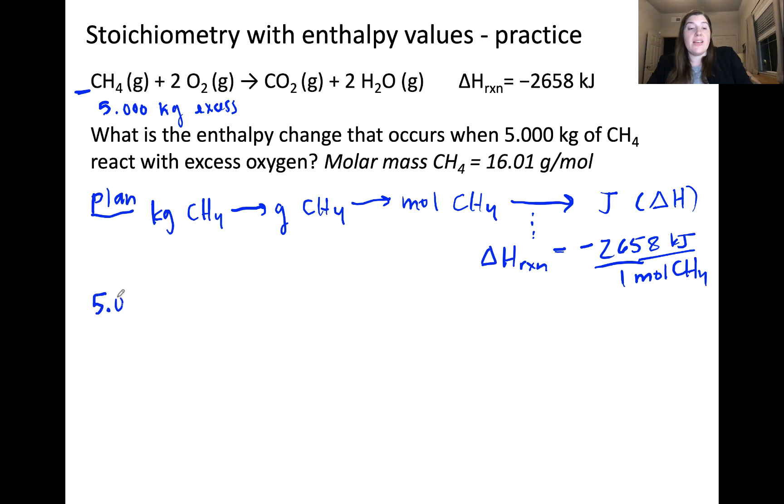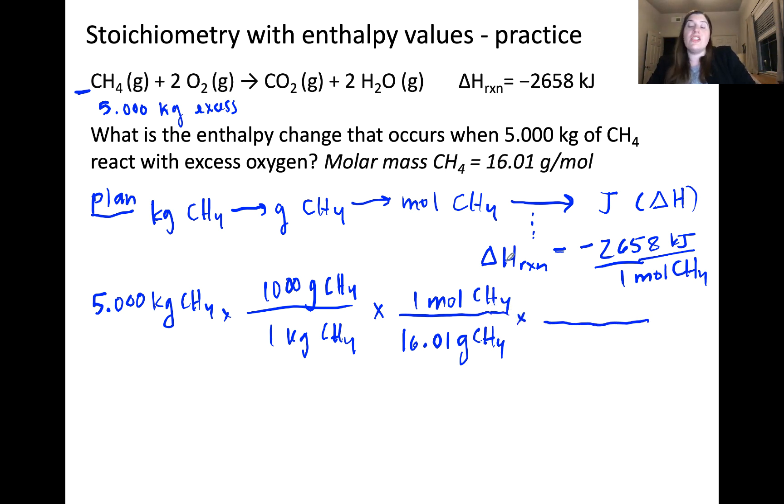To do this problem, we'll start out with our kilograms of CH4. We know from previous modules that there are a thousand grams in one kilogram. And we're given the molar mass of methane in this problem, so we don't even have to calculate it. It's given as 16.01 grams of methane per one mole of methane. Now comes the new part of our stoichiometry problem, which is that we can use the change in enthalpy of the reaction as a conversion factor. We'll put one mole of methane on the bottom, because we need our moles of methane to cancel, and negative 2,658 kilojoules of energy on the top. This is coming from our delta H value.